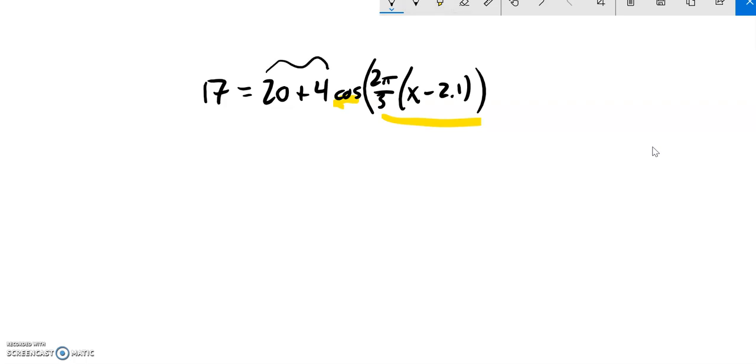Sometimes I'll see people add these together to a 24, that's not a good first step, that's not what's going on. So let's subtract 20 from both sides and I get a negative 3 here. Notice that's equal to 4 times cosine of all that stuff.